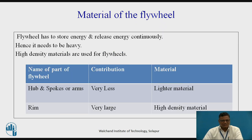For the materials of the flywheel: since we need energy storage, heavy materials are to be used. The hub and spokes or arms contribute very little — only about 10 to 15% of the energy storage — so lighter materials can be used for them. The rim, being the outer part, contributes very largely, up to 90%, so high density material should be used for the rim. For an efficient flywheel, the rim is to be made of high density material, while the hub and spokes should be made of lighter material.